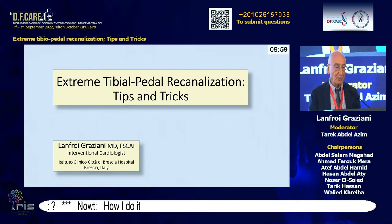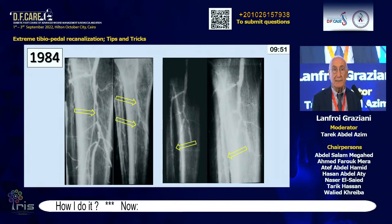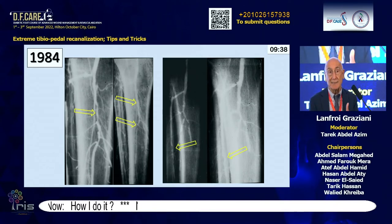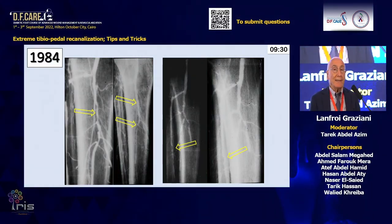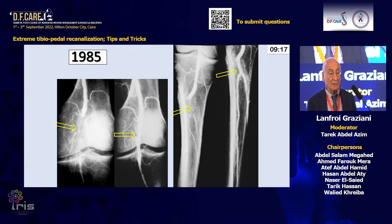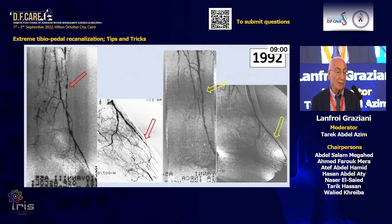Extreme tibial revascularization started in my practice many years ago. Suitable devices were not available, and I arranged the first attempt using the dilator technique, passing through catheters with progressive sizes just to increase the outflow in patients who were really in crisis — diabetic and calcified. This is one of the first occlusions I opened in 1985: occlusion of the tibial-pedal trunk and the plantar arch.